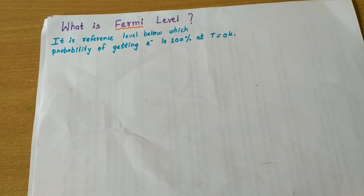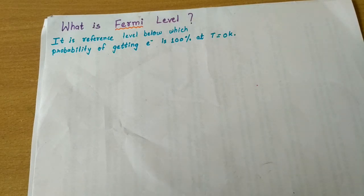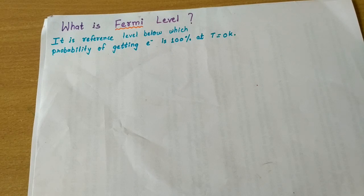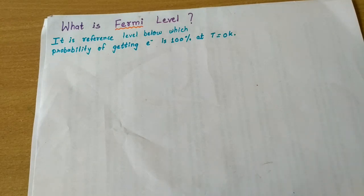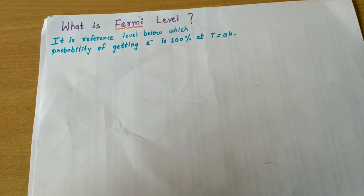Everything needs a reference, so there is one reference energy level. Below this reference level, the probability of finding an electron is 100%, provided the temperature is zero Kelvin. At the reference level itself, the probability of finding an electron is given by the formula — the Fermi-Dirac function — which we will be seeing in a while.